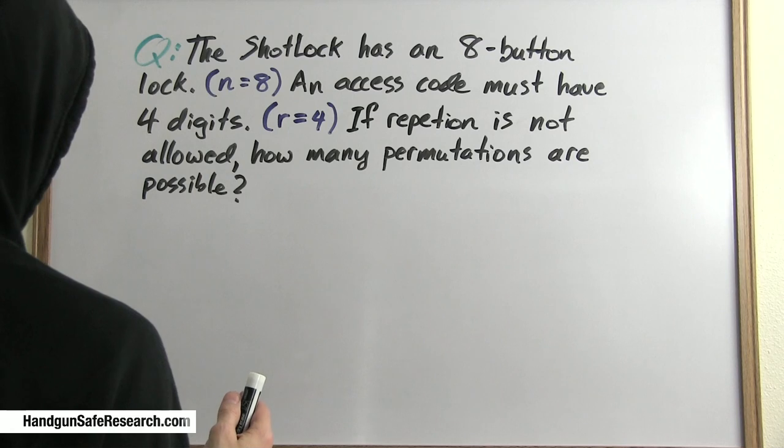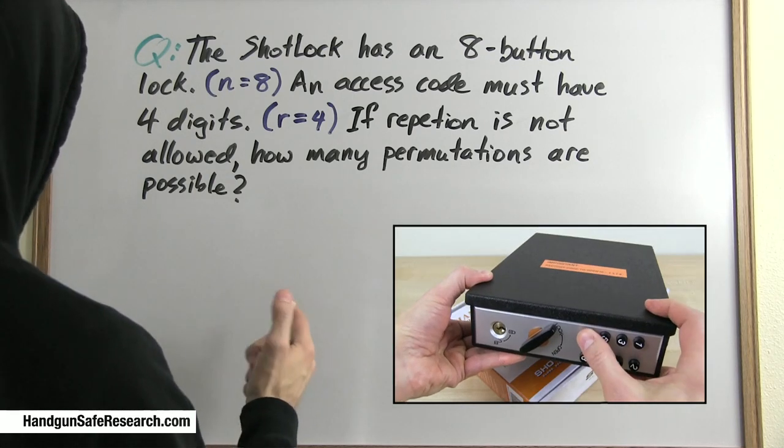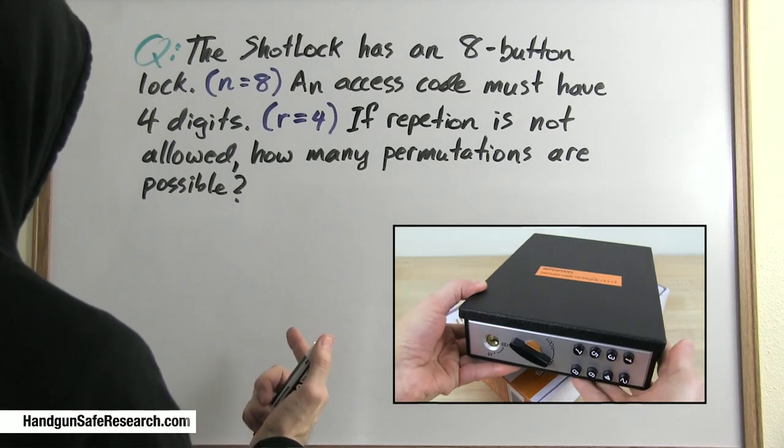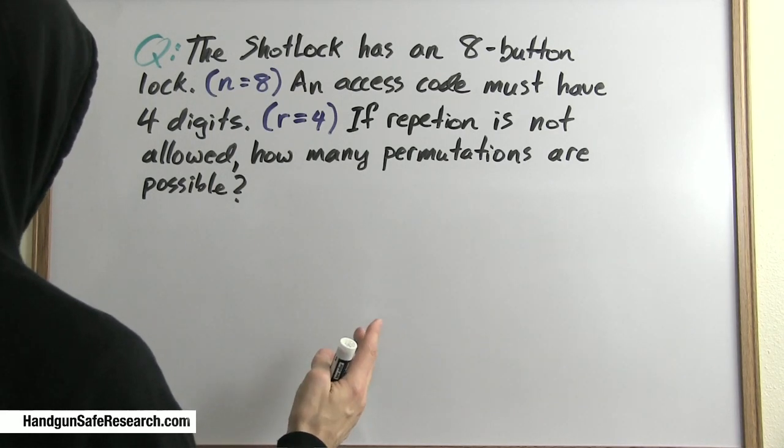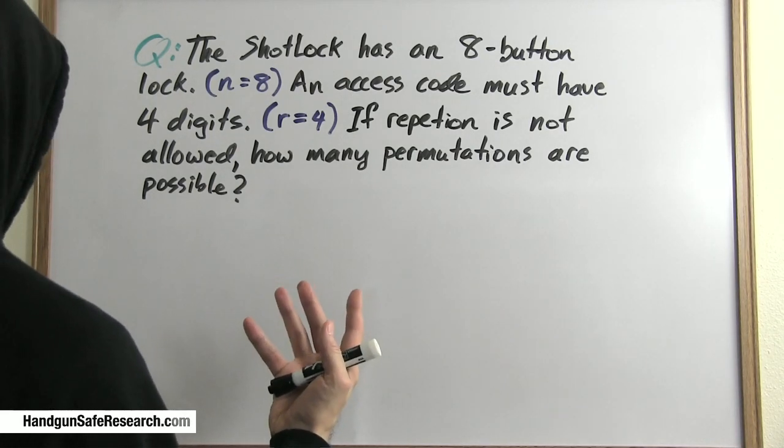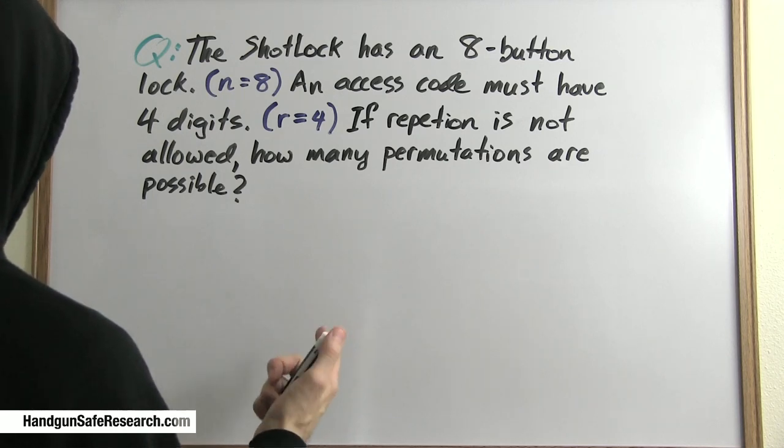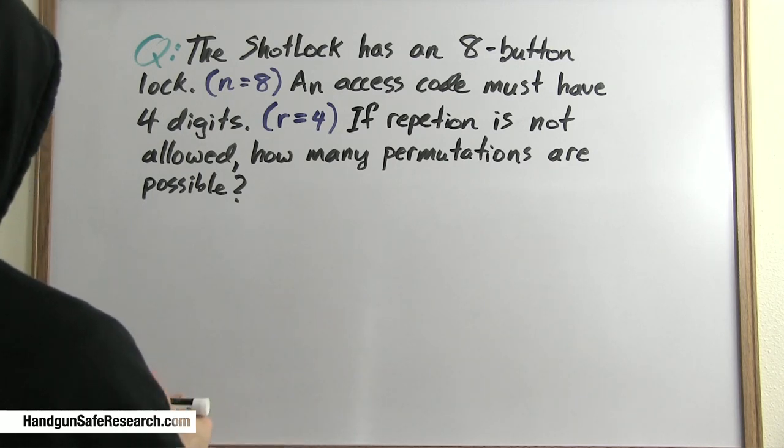Let's solve a permutations problem using our new formula. The Shot Lock has an 8-button lock, so n equals 8. An access code must have 4 digits, r equals 4. If repetition is not allowed, how many permutations are possible?